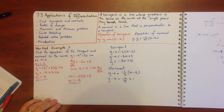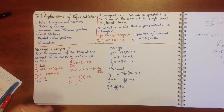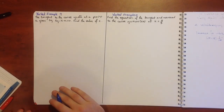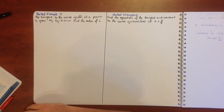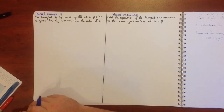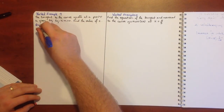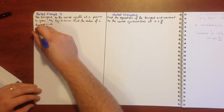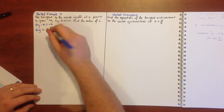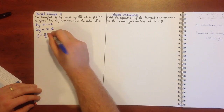Moving on to worked examples 9 and 10. In example 9, the tangent to the curve y equals the square root of x is given by 6y minus x plus c equals 0 — find the value of c. We rearrange: 6y equals x minus c, so y equals x on 6 minus c on 6. From this form we can identify the gradient.